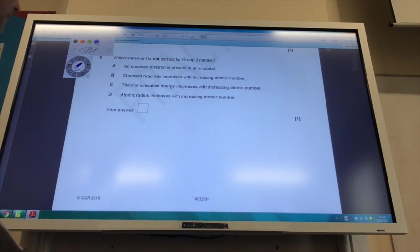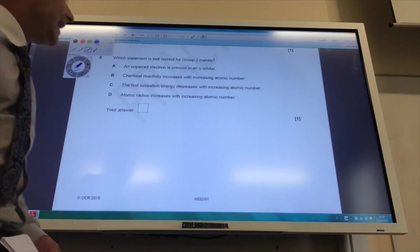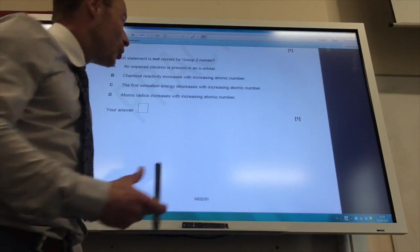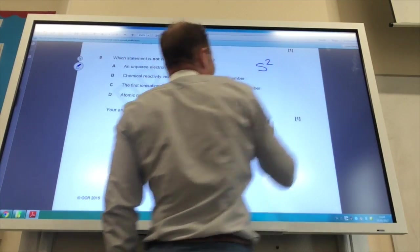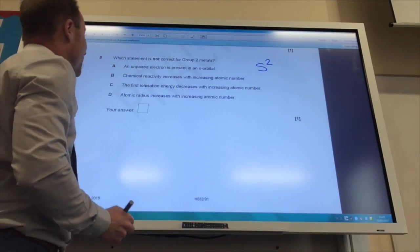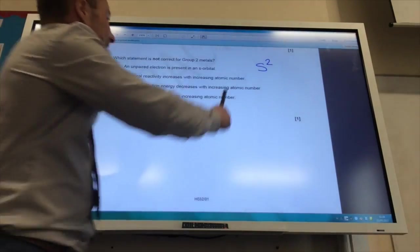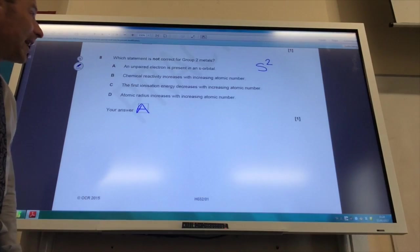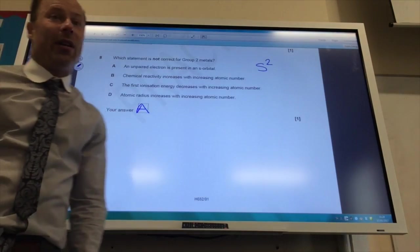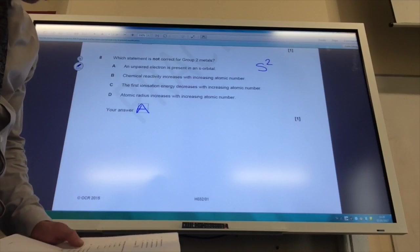Question 8. Which statement is not correct for group 2 metals? An unpaired electron is present in an S orbital. Well, group 2 all have the electronic configuration of S2, so that is false because these electrons are of course paired. I've got two electrons in that orbital, that S orbital. So 8A statement is not correct.